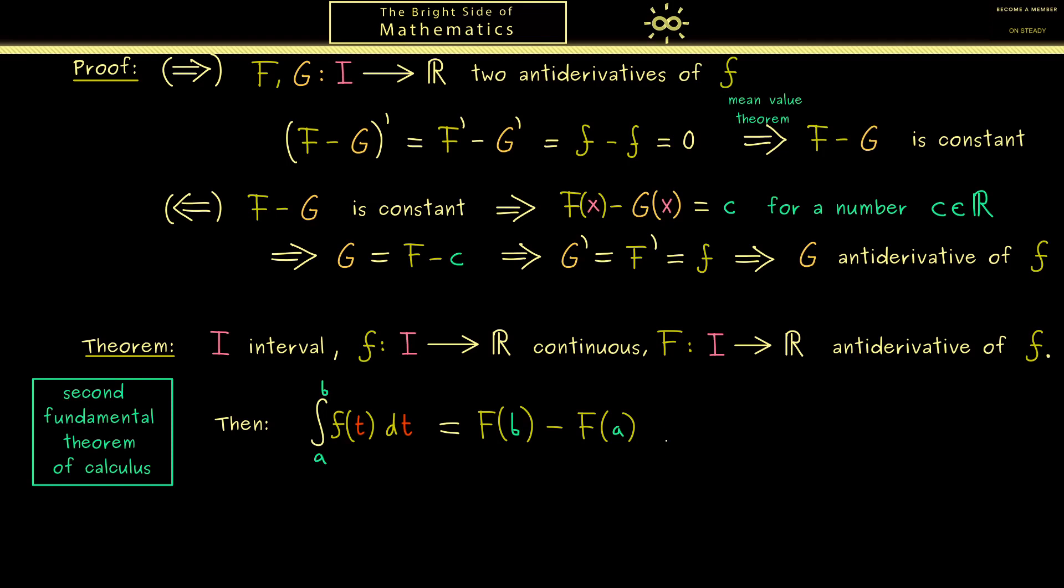Now for explicit calculations it's helpful to have a short notation for this difference on the right hand side. One simply writes F or F(x) and then comes a vertical line with a and b on it. So you would read this as F of the upper number minus F of the lower number.